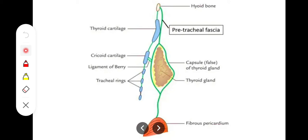The superior attachment of the pre-tracheal fascia is the hyoid bone, the oblique line of the thyroid cartilage, and the cricoid cartilage. It encloses the thyroid gland. In its inferior attachment, it encloses the inferior thyroid veins, then passes behind the brachiocephalic veins, and ends by fusing with the fibrous pericardium and the arch of aorta.